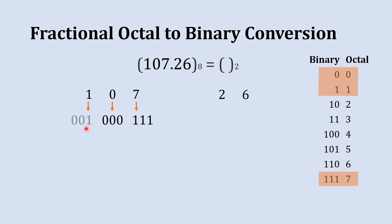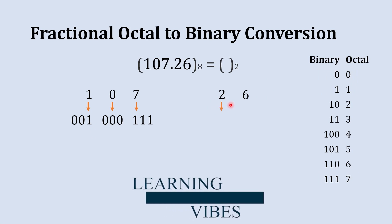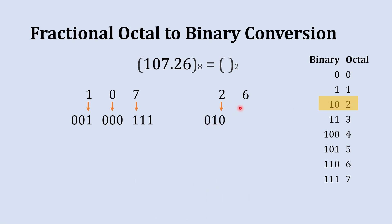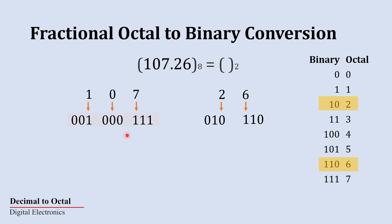Now for the fractional part .26, we start with 2. The binary equivalent to 2 is 0 1 0, so we write 0 1 0. The next digit is 6, and the binary equivalent to 6 is 1 1 0, so we write 1 1 0 as well.